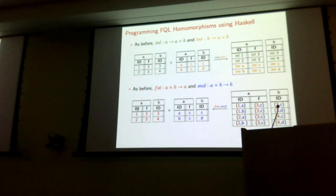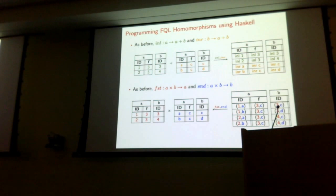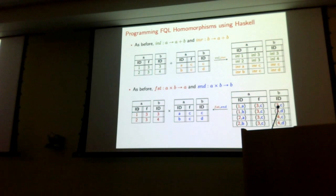Here are the sum and product examples for morphisms. We're adding the green instance and the orange instance, and the injections say: map ID 1 to inl-1, map ID 2 to inl-2, map ID A to inr-A. And dually for products, I give you a map from the product's IDs to either component: the first projection maps (1, A) to 1, (1, B) to 1, and so on. So that's the end of the technical material. The point of this part is that FQL instances and the morphisms between them are a model of the simply typed lambda calculus.